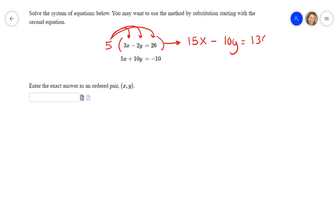I'm not gonna mess with the bottom equation at all, just leave it as 5x plus 10y equals negative 10. The y's cancel out, and then 15x and 5x is 20x, and 130 minus 10 is 120.